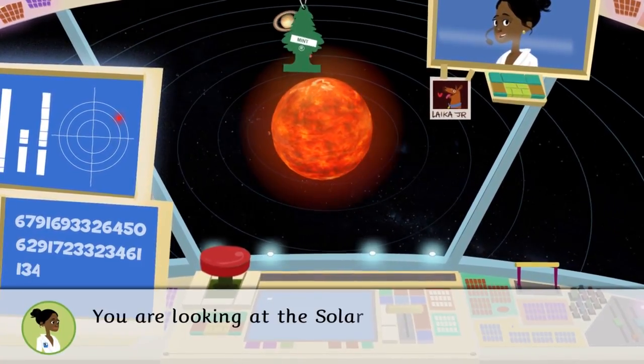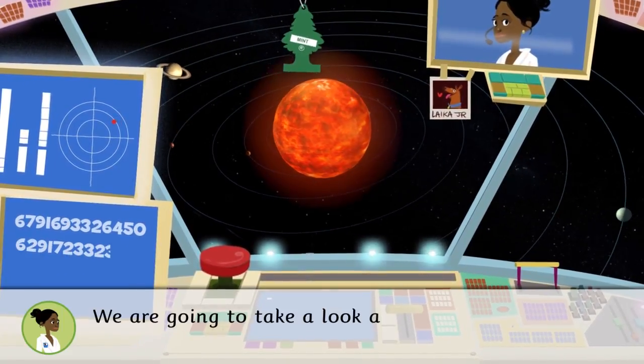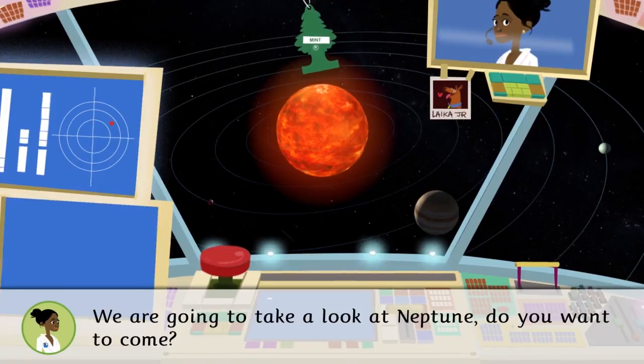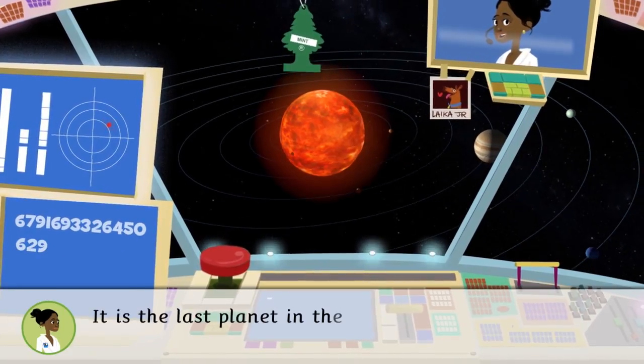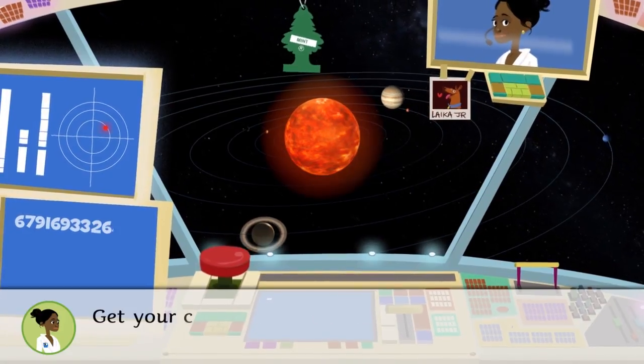You are looking at the solar system. We are going to take a look at Neptune. Do you want to come? It is the last planet in the solar system and therefore the coldest. Get your coat and let's go!